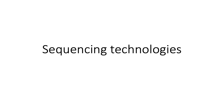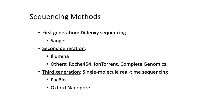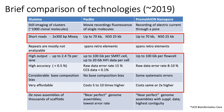Now let's discuss some of the key historic as well as current sequencing technologies available today. The first generation sequencing approaches started with the Sanger method. Second generation methods include things like the Illumina sequencing-by-synthesis approach, as well as some others we won't cover in this lecture. Third generation sequencing methods are basically single-molecule, represented mostly by PacBio and nanopore sequencing, which we'll talk about today.